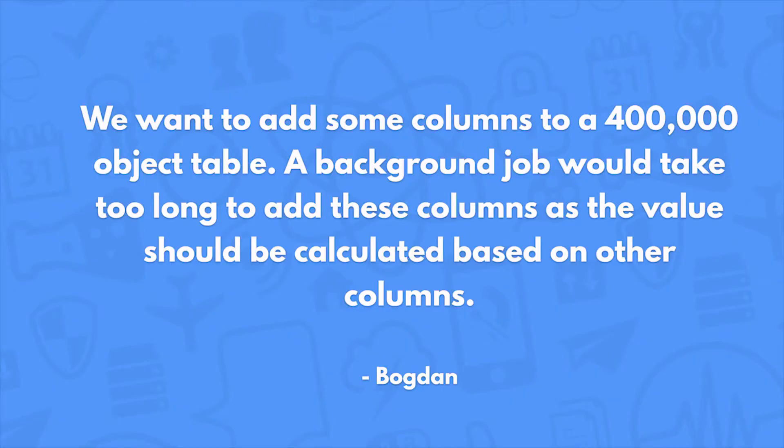We want to add some columns to a 400,000 object table. A background job would take too long to add these columns, as the value should be calculated based on other columns. You can actually do that today, and I would suggest that you use a background job. A background job should not take too long to process 400,000 records. If you go to your account settings and bump the request limit for this app up to 600 requests per second, that should allow a background job to process 400,000 records in less than 11 minutes.